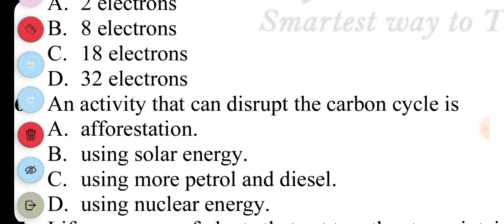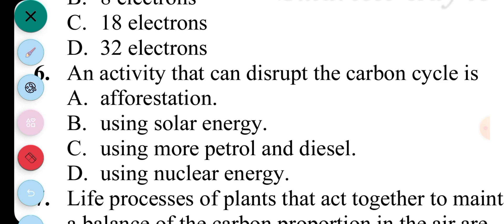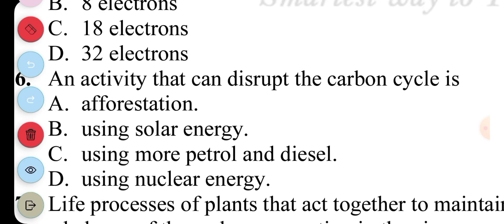Question 6. An activity that disrupts the carbon cycle is A. Afforestation, B. Using solar energy, C. Using petrol and diesel, D. Using nuclear energy. The answer to question 6 is C. Using petrol and diesel.